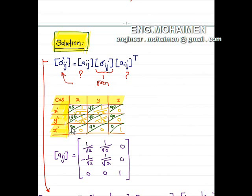Between z-prime and x is 90 degrees, between y and z-prime is also 90 degrees, and between z and z-prime is 0 degrees. The cosine of each angle is shown in yellow: 1/√2, 1/√2, cosine of 90° = 0, negative 1/√2. This gives us the direction cosine matrix, which is the A matrix as shown here.